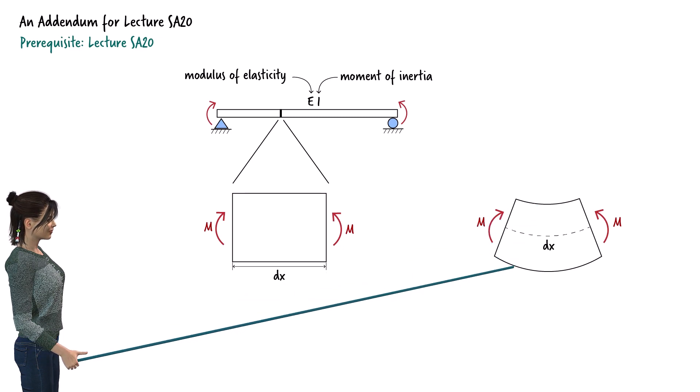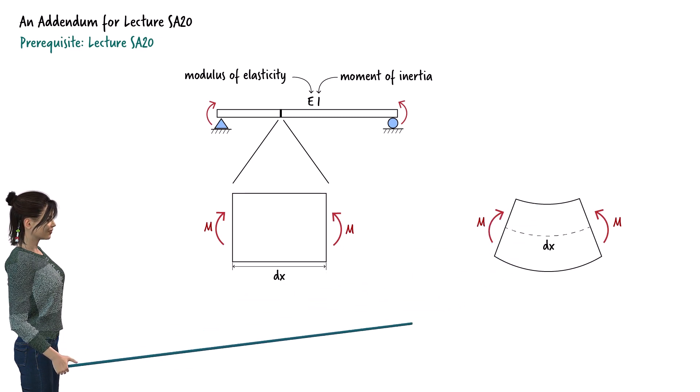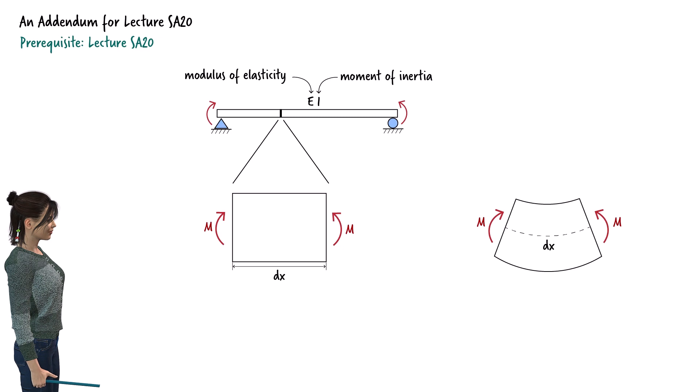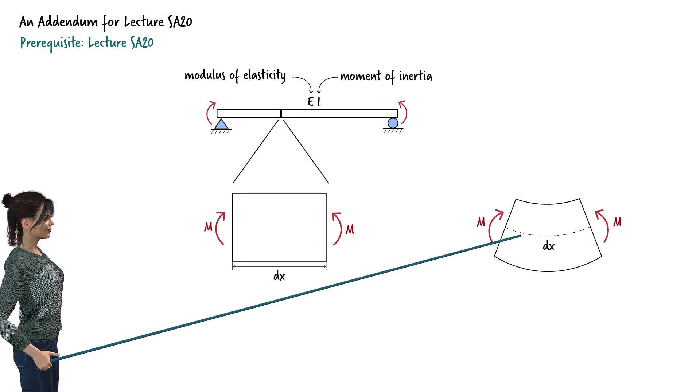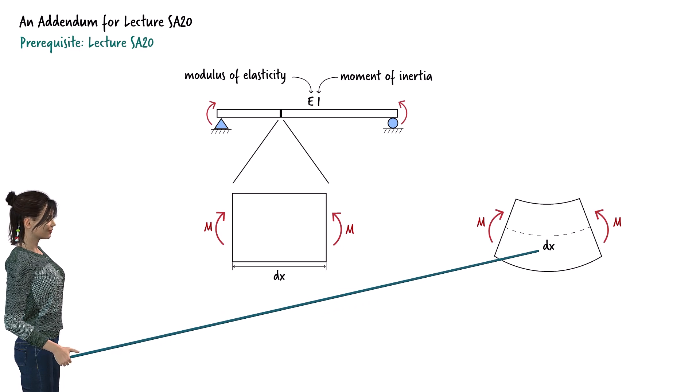The top fiber of the segment shortens, and the bottom fiber elongates. Hence, there must be a fiber within the segment whose length remains unchanged. Here, I've shown that fiber using a dashed curve. The arc length of the curve, therefore, is dx.